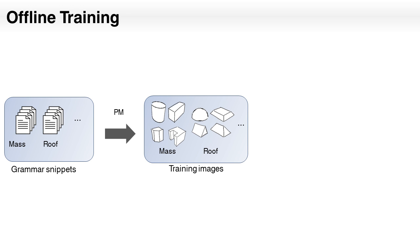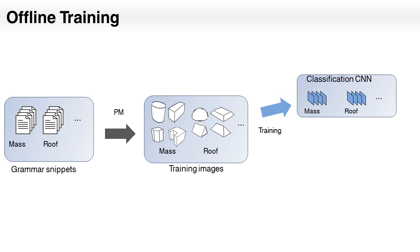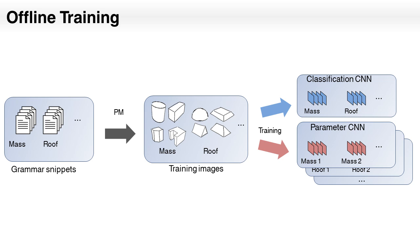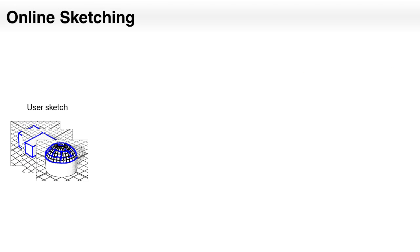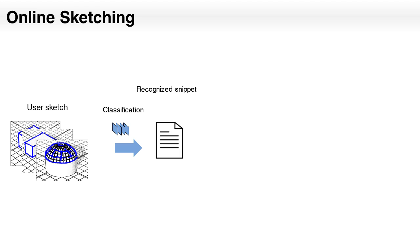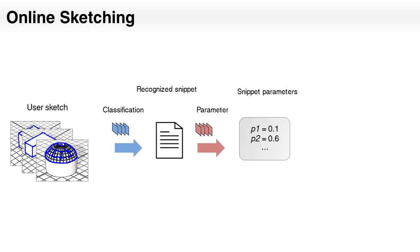With the generated samples, we train two types of convolutional neural networks: one for recognition of the snippets, and the second one for parameter estimation. Then the user sketches a building and our system finds the grammar snippet and the parameters within milliseconds.